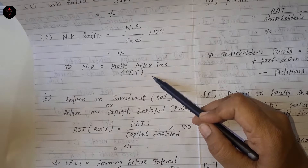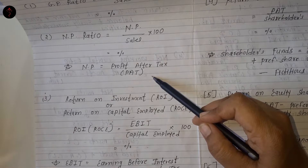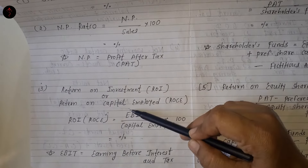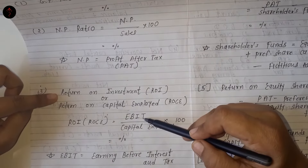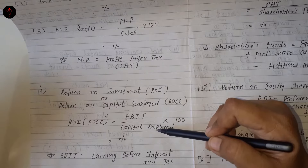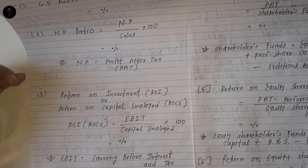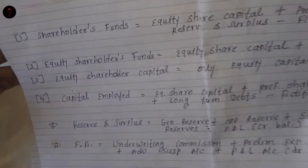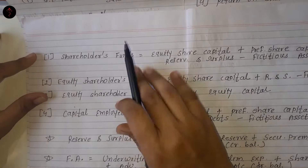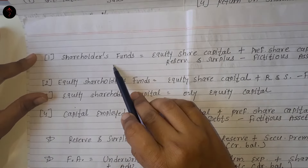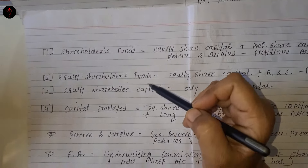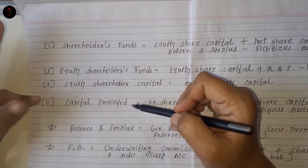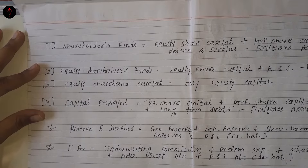Remember students, we don't have only one meaning of profit. We have earning before interest and tax, we have profit after tax. Then return on investment or return on capital employed — remember students, investment and capital employed. Return यानि earning before interest and tax, और investment या capital employed का meaning क्या है? — मैंने यहाँ पर लिखा हुआ है. Most of the ratios have any one of these four in the denominator.